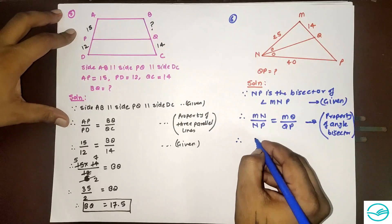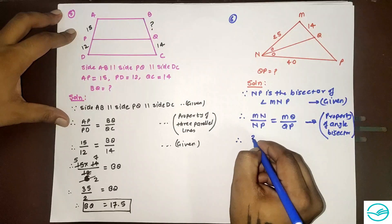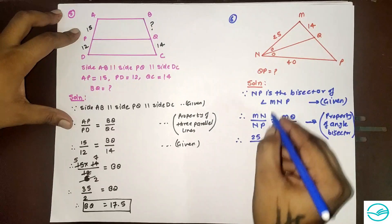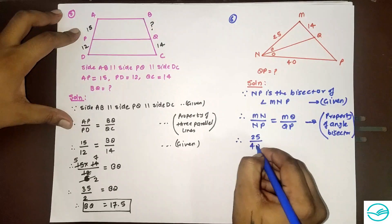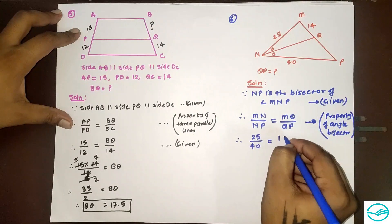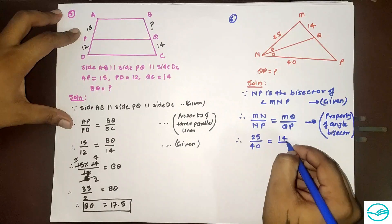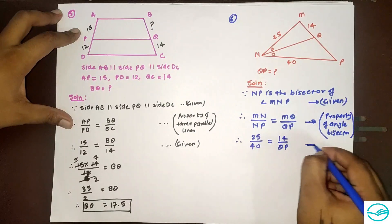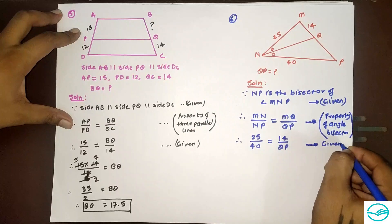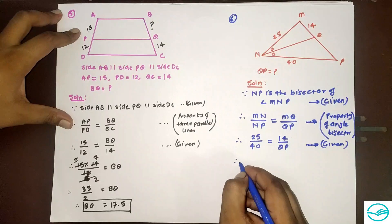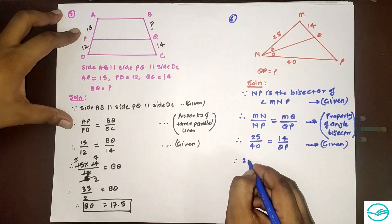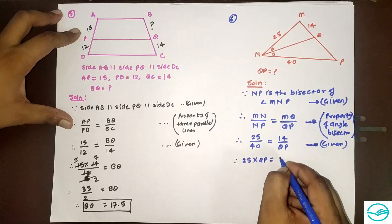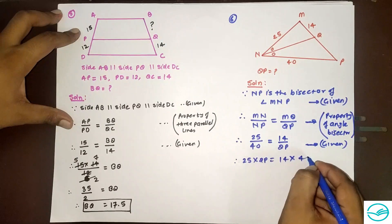By the property of angle bisector, MN divided by NP equals MQ divided by QP. Substituting values: MN is 25, NP is 40, MQ is 14, and QP is unknown. So 25 divided by 40 equals 14 divided by QP. Cross multiplying: QP equals 14 into 40 divided by 25.